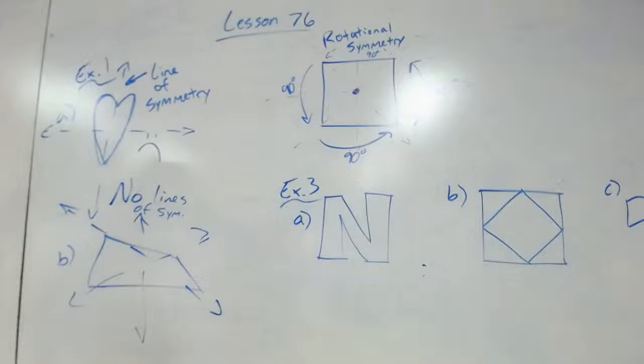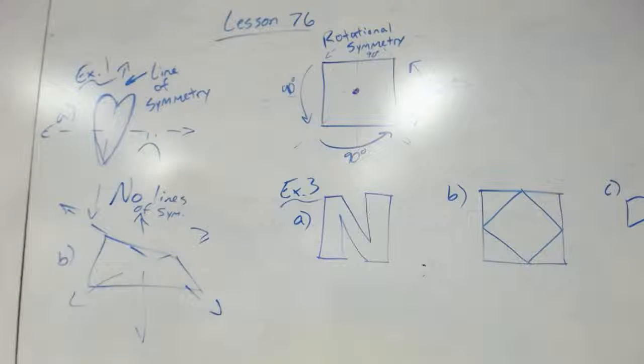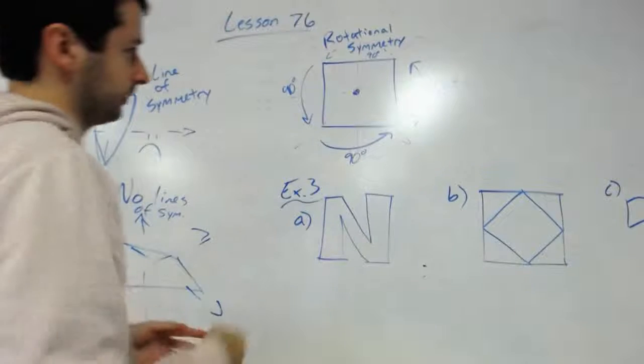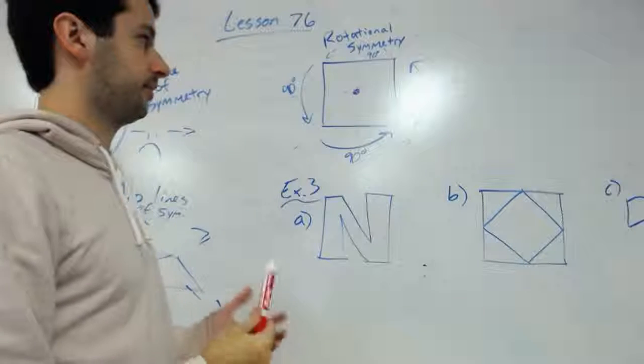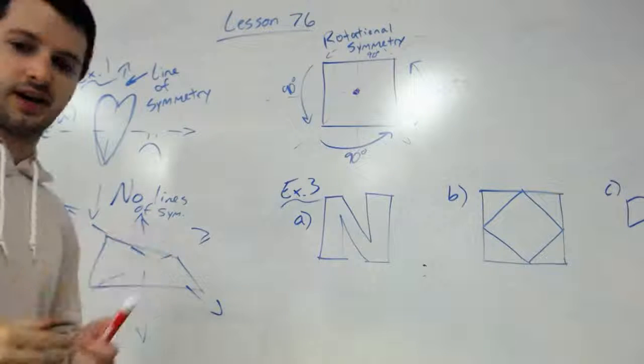So you actually got four lines of symmetry. Just a little pointer, for however many, if it's a regular polygon, you will always have the amount of lines of symmetry as the amount of vertices. So a triangle would have three lines of symmetry, quadrilateral four, pentagon five, and so on.